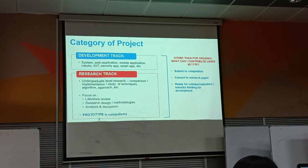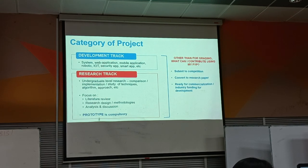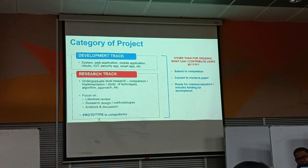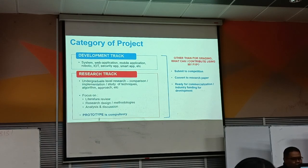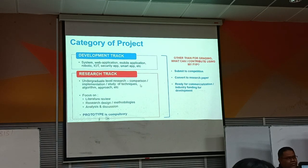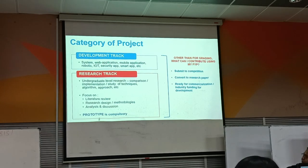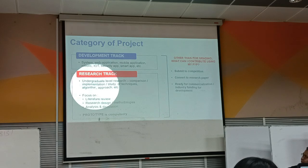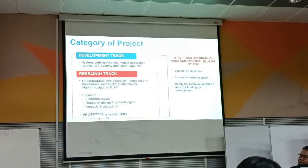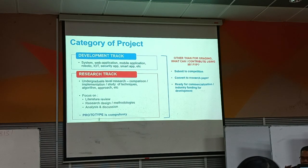For category of project, most of you will be doing the development track — developing an application, mobile app, IoT, machine learning, or any module based on your program. Or, if your supervisor is more on the research track, you might do some kind of study. For undergraduate-level research, you can do comparison, implementation, or study of techniques, algorithms, and approaches. You are not expected to develop a new algorithm — that is PhD level. At degree level, research means comparison, for example showing which algorithm is faster.